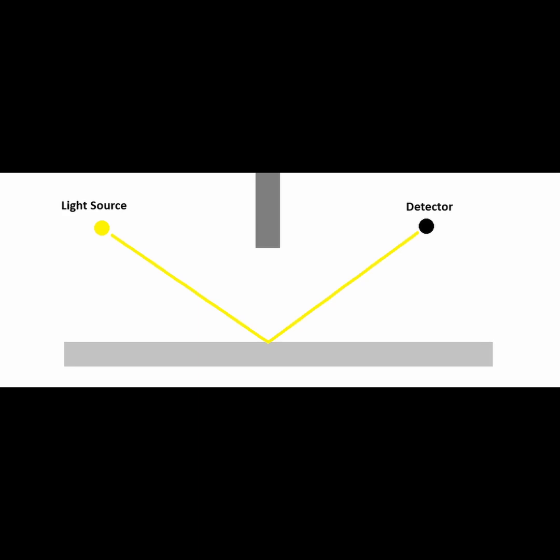Notice that the source and detector are positioned at the same height with a barrier between them, so none of the light from the source can go directly to the detector. Our conventional wisdom would expect that light coming into the detector would follow a path from the source hitting the middle of the mirror and reflecting up to the detector.